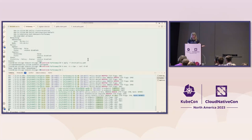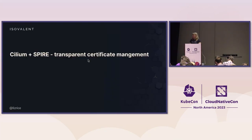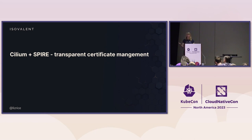This is another thing that's transparent — we don't need the applications to get involved. We don't really need to do any configuration other than turning mutual authentication on and saying please use SPIRE. Cilium will automatically start running the SPIRE service.